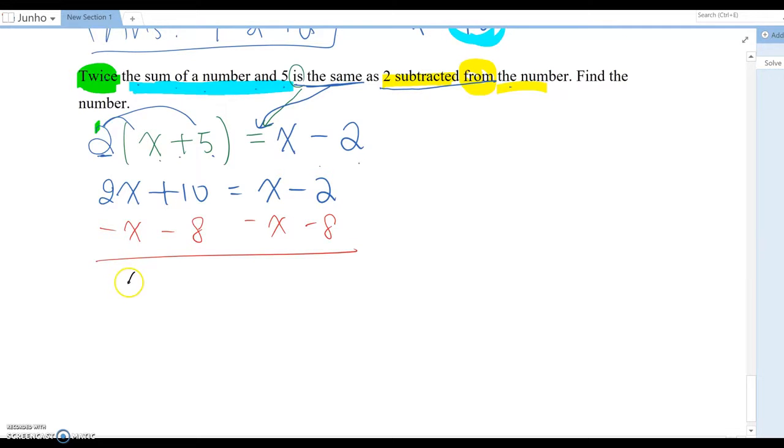this becomes x, sorry, this is actually ten, then x equal to negative 12, because those are gone here, right? So now we find out x equal to negative 12, basically.